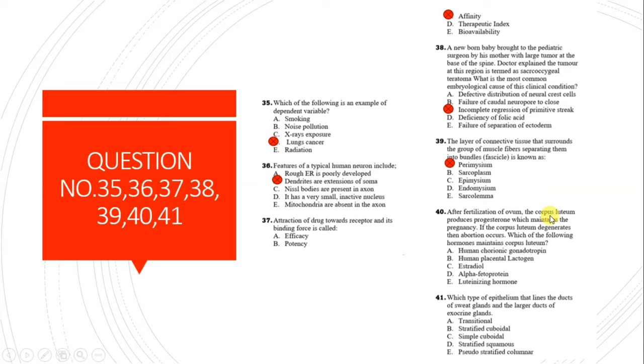Question 40: After fertilization, the corpus luteum produces progesterone to maintain pregnancy. If the corpus luteum degenerates, abortion occurs. Which hormone maintains the corpus luteum?